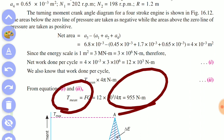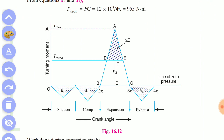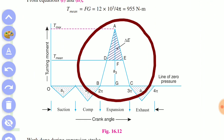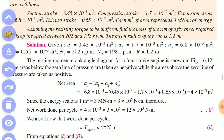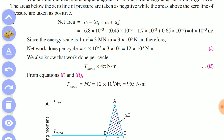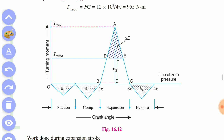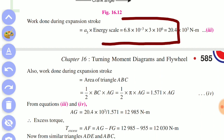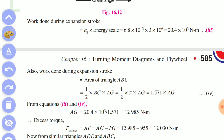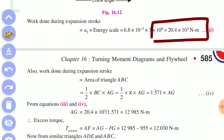The result is 950 Nm. If you have 950 Nm and you know this area, you can identify the expansion stroke area of 6.81×10⁻³ meters squared. Multiplying by the scale value gives the power stroke energy of 20.4×10⁻³ Nm.